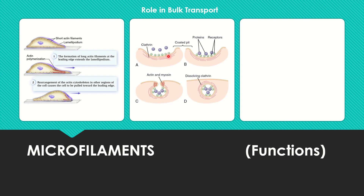The area of the cell immediately beneath the cell membrane is called the cell cortex, which is rich in actin. During endocytosis, receptors, actin, and clathrin work together; a pit is formed, then actin and myosin work together to pinch this vesicle off, and it is endocytosed. So actin has a major role in bulk transport.